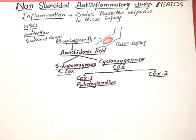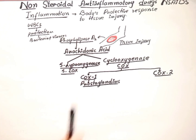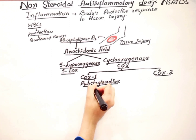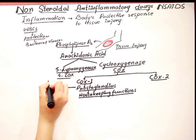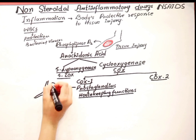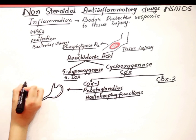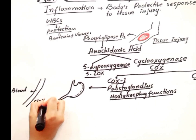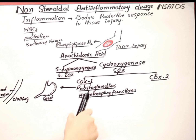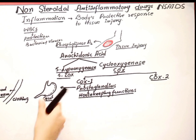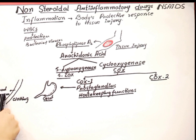The COX-1 enzyme makes prostaglandins with housekeeping functions. They regulate the mucosal lining of the gut and regulate the clotting function of blood. So COX-1 is the enzyme that performs these housekeeping functions — it maintains the gut lining and also regulates the clotting function of blood.